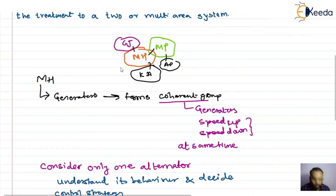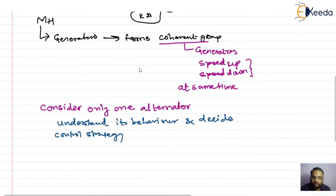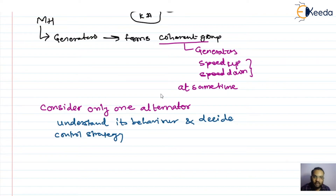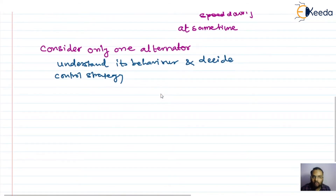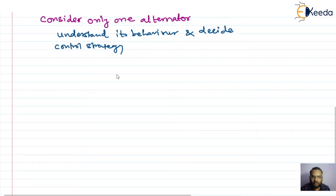To summarize: the alternators in Maharashtra form a coherent group, so instead of deciding a control strategy directly for all generators, we study a single generator, understand its behavior, and decide the strategy for the complete area. That same understanding is then extended for the single area, and then further extended for the whole national grid.